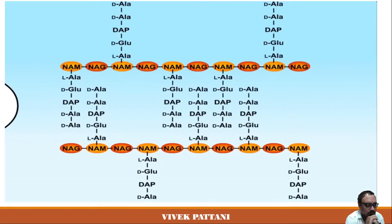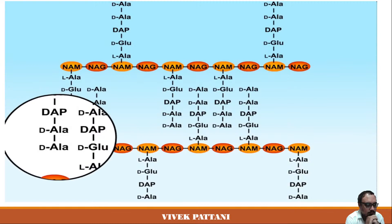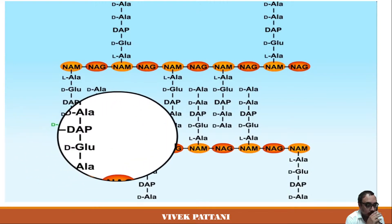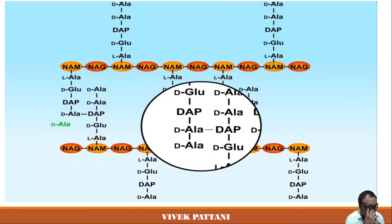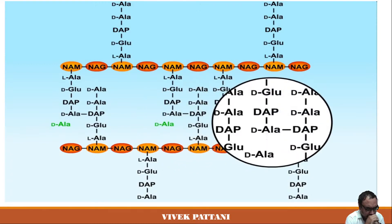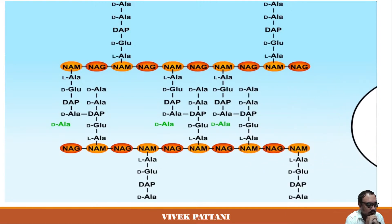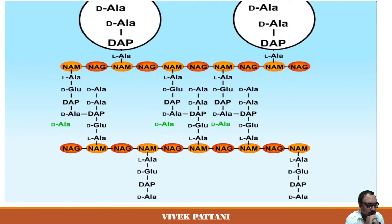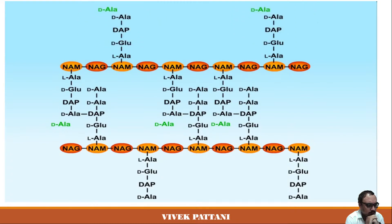Finally, the peptide side chains are linked together by transpeptidation reactions forming peptide bonds. In E. coli, the free amino group of diaminopimelic acid is linked to the carboxyl group of the subterminal D-alanine, releasing the terminal D-alanine. Other enzymes remove the terminal D-alanine from side chains that are not cross-linked.